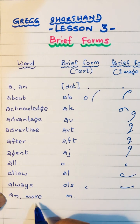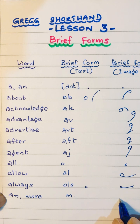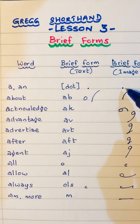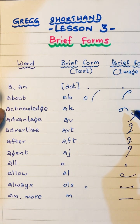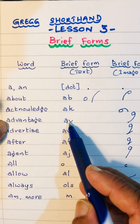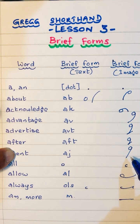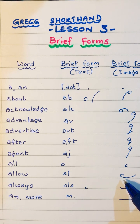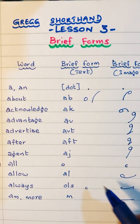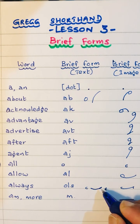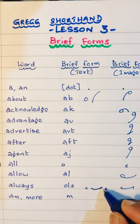We discussed about 'm' and 'more' — it is only m, m. I think you can remember those strokes. So to summarize: 'about' is a-b, 'acknowledge' is a-k, 'advantage' is a-v, 'advertise' is a-v-t, 'after' is a-ft, 'agent' is a-j, 'all' is a-l-l, 'allow' is a-l, 'always' is o-l-s. You can write it like this because the l-l comes like this and after that we are using s.